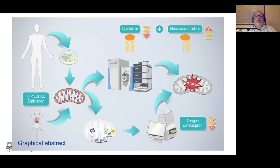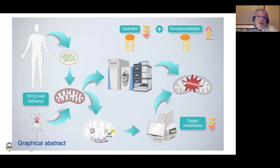Summarizing our article, we worked with two kinds of biological specimens: fibroblasts from humans with TFP/L-SHAD deficiency patients, and also liver from a beta-TFP mouse model. Both the mouse model and the human cells were analyzed for lipidomics, especially phospholipids, cardiolipins, and other phospholipids. Human cells were also analyzed in terms of mitochondrial bioenergetics, that is, oxygen consumption.